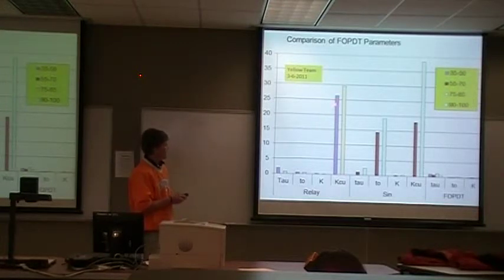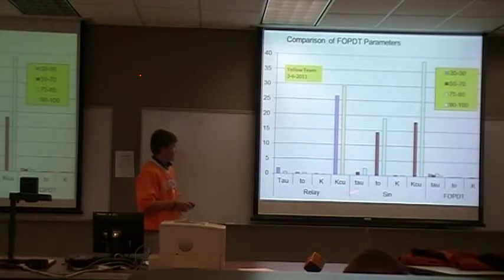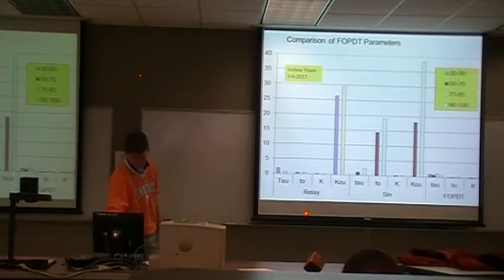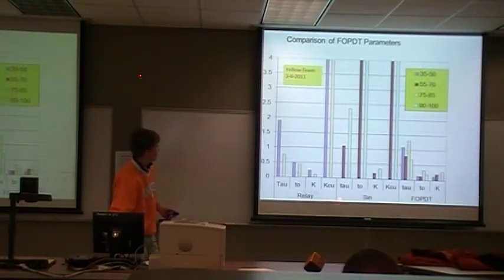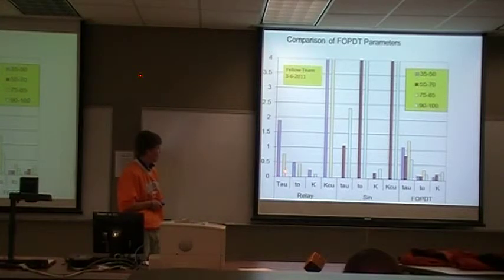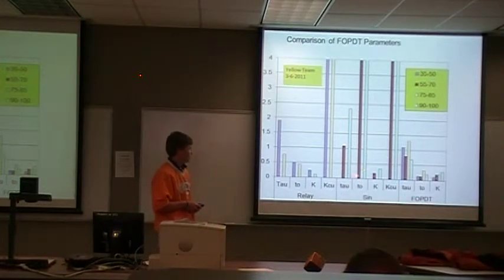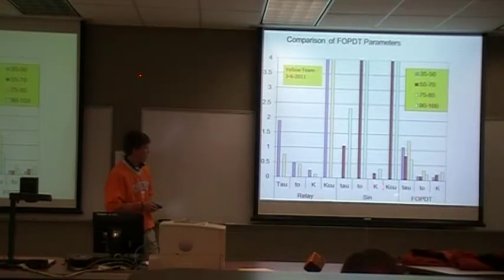In this comparison, the KCU values are very large, making everything else look small in the graph. The KCU values are very different from each other — there doesn't seem to be any pattern between them, and they don't match up very well. We honed in on the graph to see the smaller values better. Between the relay, the sine, and the FOPDT results, none of the values match well. For the sine, we ended up with totally different values than what we found in the FOPDT.